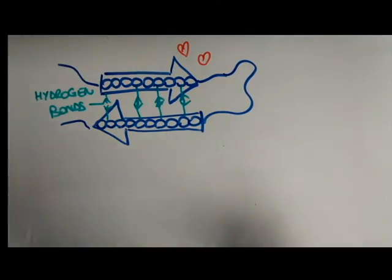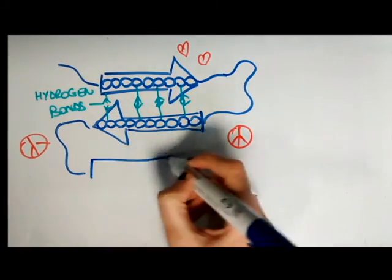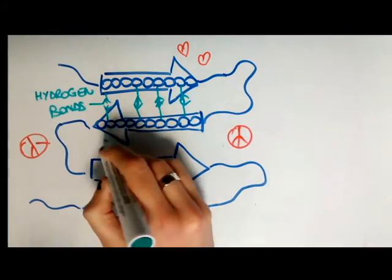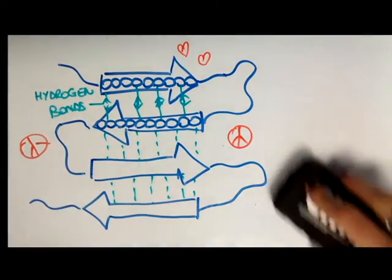Beta strands are quite open-minded and can compare to hippies as they enjoy free love and usually interact with two different strands. Several beta strands can thus interact with each other and this happy community is called a beta sheet.